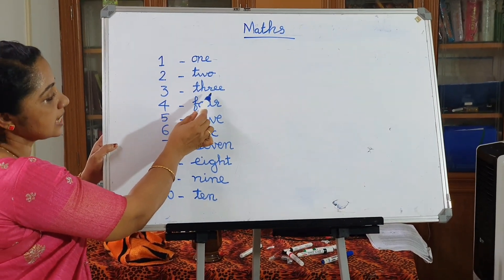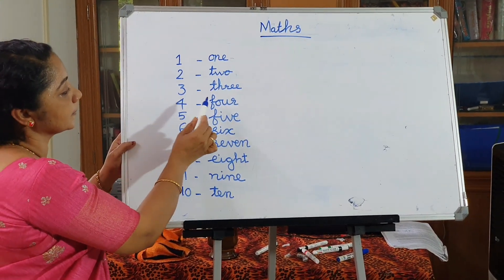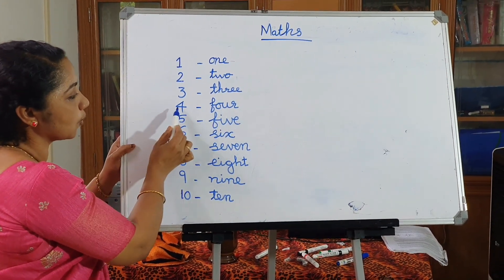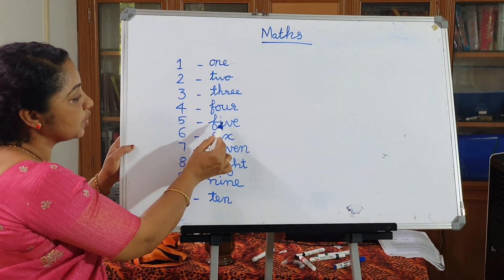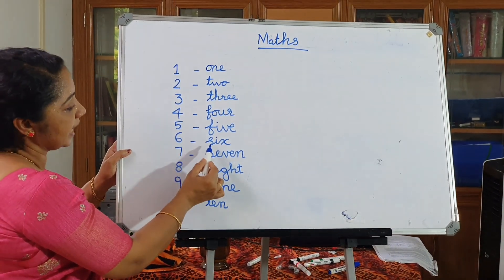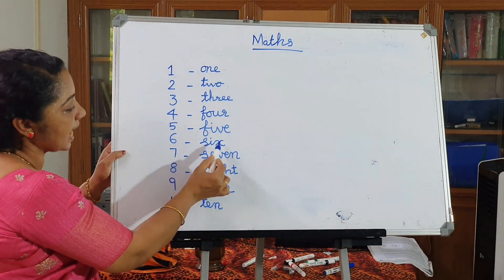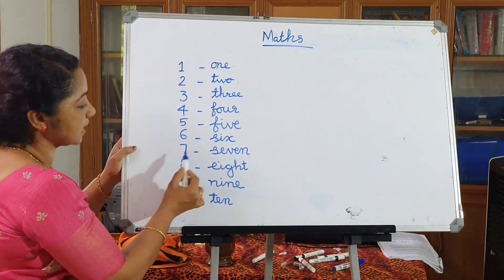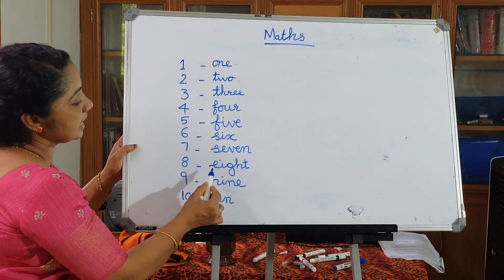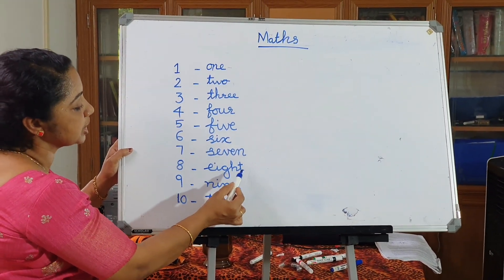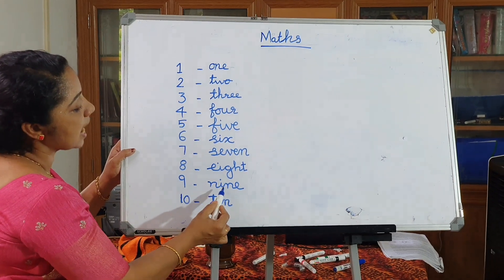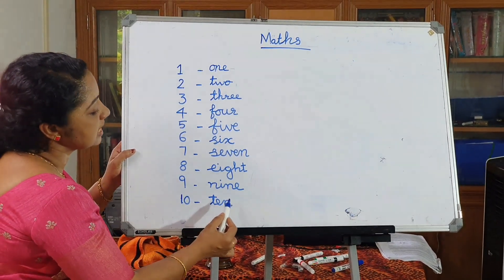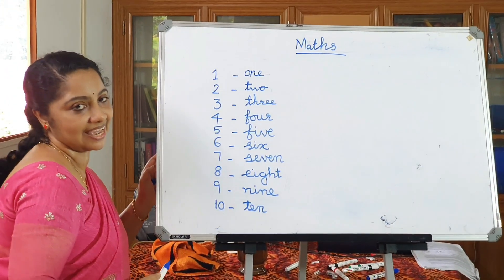S-I-X: six. S-E-V-E-N: seven. E-I-G-H-T: eight. N-I-N-E: nine. T-E-N: ten.